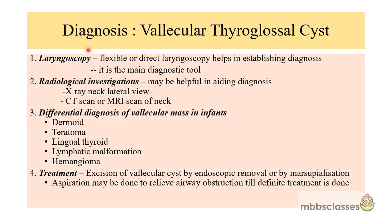If we find a cyst in the vallicular region during laryngoscopy, vallicular cyst is not the only diagnosis. There are certain differential diagnoses which must be kept in mind. These could be dermoid, teratoma, lingual thyroid, lymphatic malformations, and hemangiomas. These are the differential diagnoses of a vallicular mass in cases of infants and children.